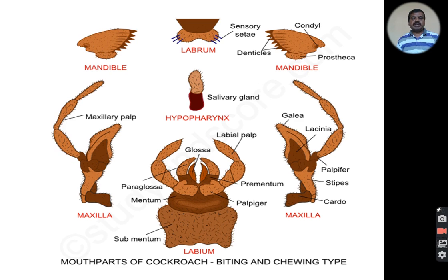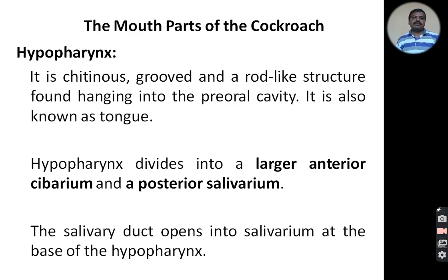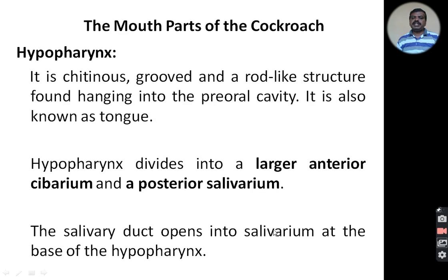The next part is the hypopharynx. It is a chitinous, rod-like structure found hanging in the pre-oral cavity, commonly called the tongue. The hypopharynx divides into two parts: the larger anterior part called the superium and the posterior part called the salivarium. The salivary duct opens into the posterior region of the hypopharynx, that is, the salivarium, at its base.